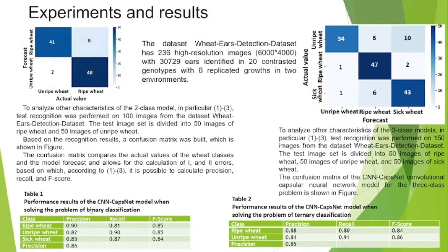The confusion matrix compares the actual values of the wheat classes and the model forecast, and allows for the calculation of type 1 and type 2 errors, based on which, according to formulas 1 to 3, it is possible to calculate precision, recall, and F-score. Based on the test set recognition results and formulas 1 to 3, average results were calculated and summarized in Table 1 and Table 2. Table 1 shows performance indicators for the binary classification and Table 2 for the ternary classification.